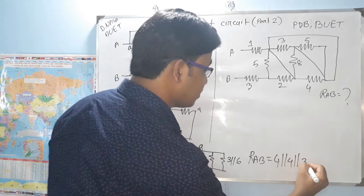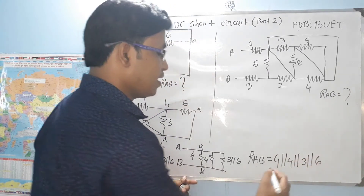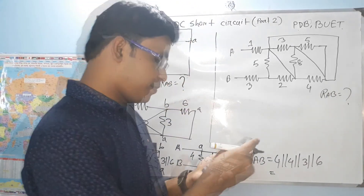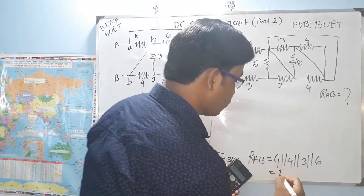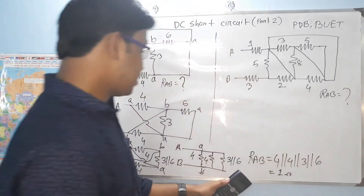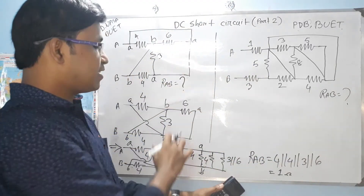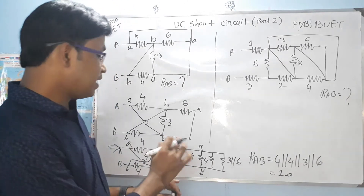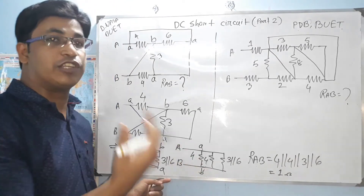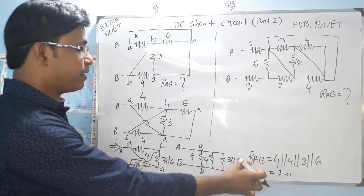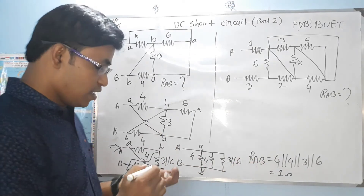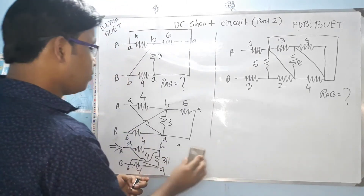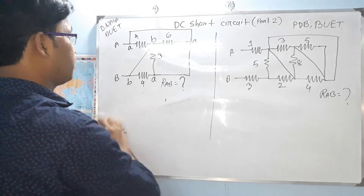4 parallel, 4 parallel, G parallel, 6. So we can use A point A. If you can use A point A, you can make sure they will be able to do that. This is the same point as we have seen. Now let's go to the next angle.